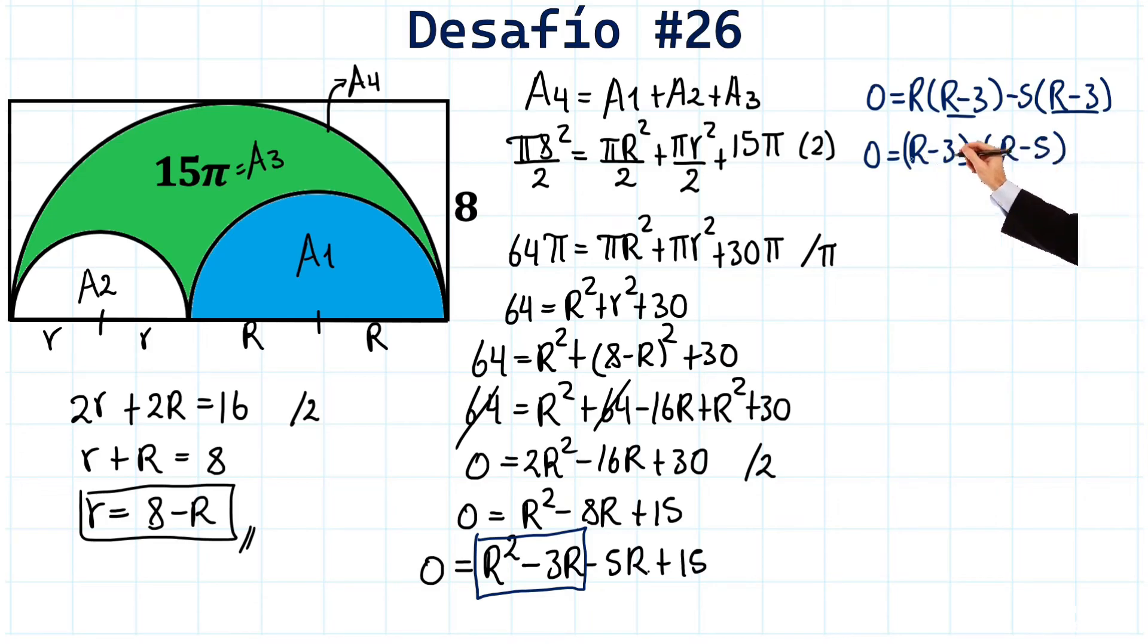And now we can set each term to 0. We have R minus 3 equals 0 here. And R minus 5 equals 0. Solving for R, we have R equals 3 here. And over here, we have R equals 5. Phenomenal. We now have the solutions to our quadratic equation.